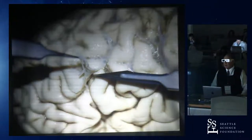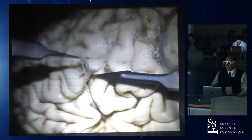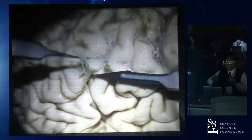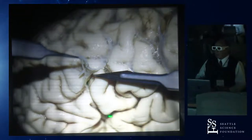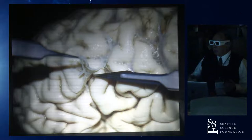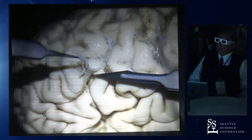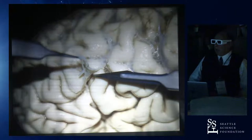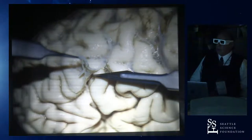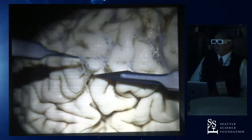First thing we have to understand: since the pia mater is very much attached to the brain surface and the arachnoid envelopes the whole CNS as a whole, we have to understand the sulci and the fissures — which are the main sulci — as extensions of the subarachnoid space. They are not only landmarks that will help us identify where we are, but they can be used as surgical corridors as well.